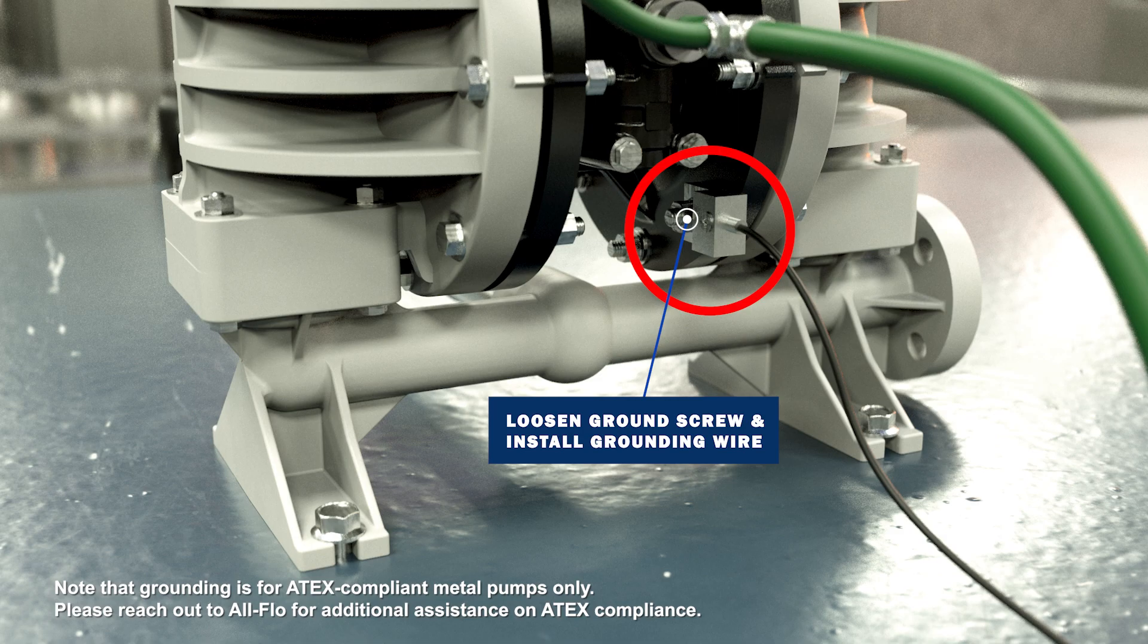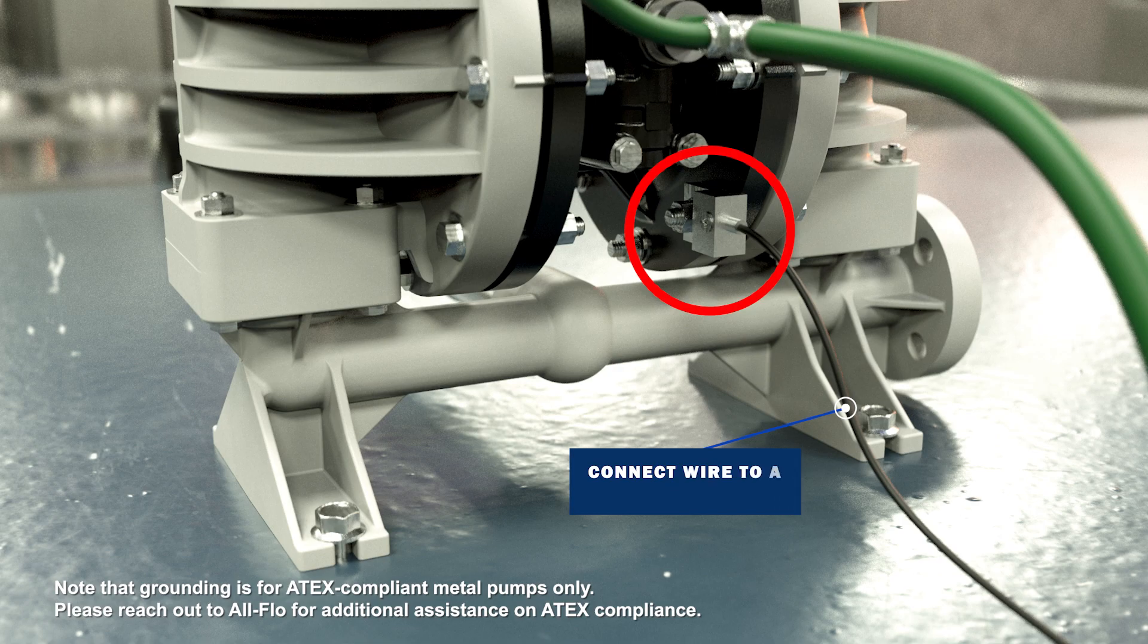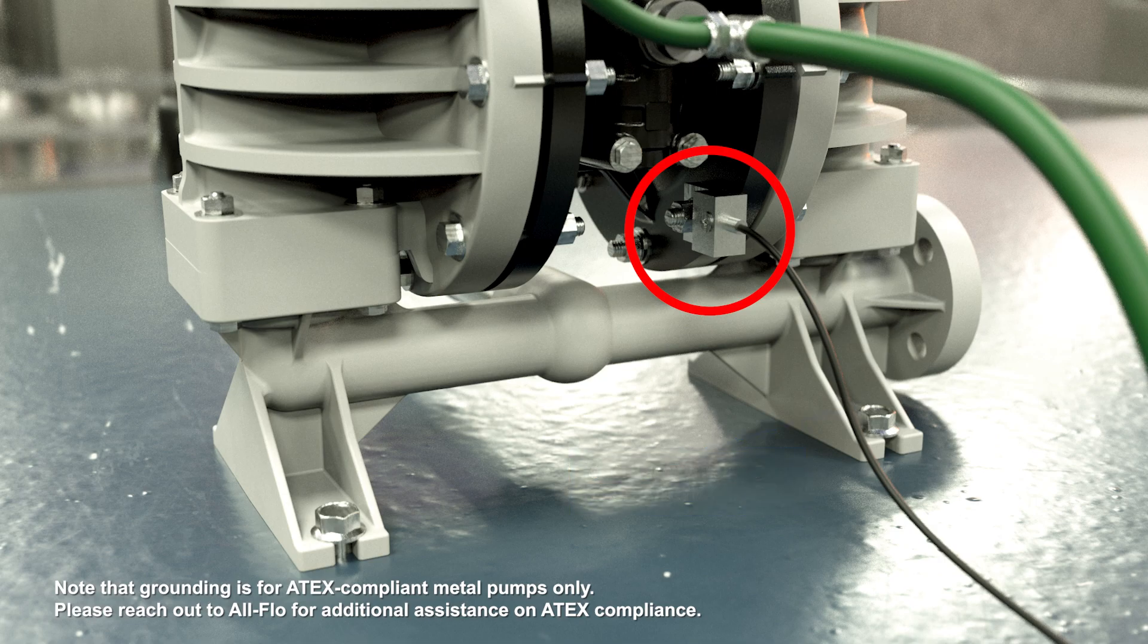The wire should be a 12 gauge wire or larger. Connect the other end of the wire to a true earth ground. The equipment must be grounded to achieve ATEX rating displayed on the pump's tag. It is recommended to configure the pump with the grounding lug option.